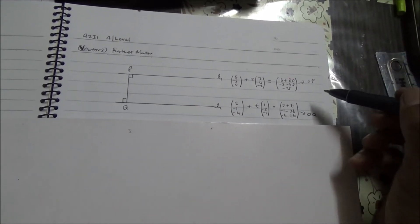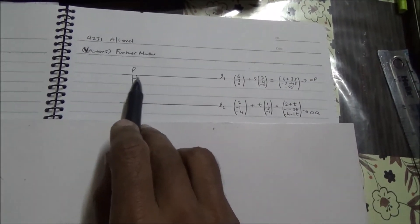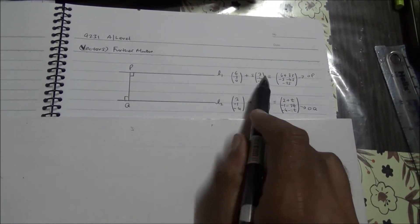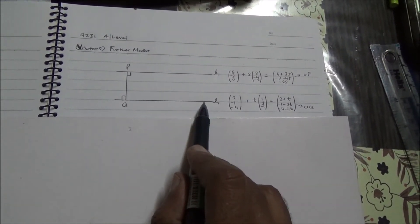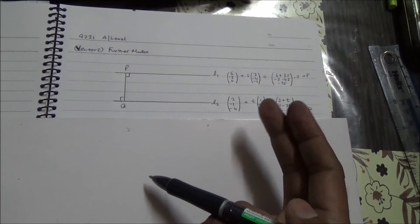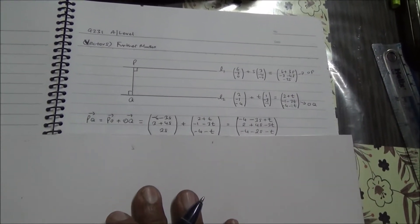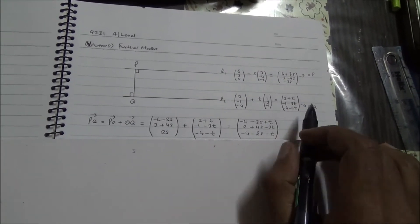From there, we're going to find the vector PQ. Because if you find PQ, you're going to dot product it with the direction vector of line L1, and then dot product with the direction vector of line L2. This produces two simultaneous equations. Then you solve those two equations to find the value of S and the value of T.